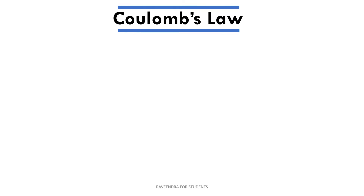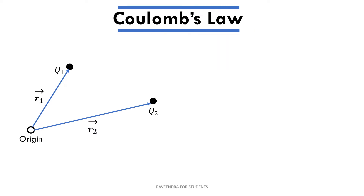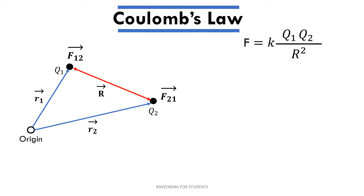Now let us see how to apply Coulomb's Law for practical cases. Assume we have an origin, and point charges q1 and q2 are placed at distance vectors r1 bar and r2 bar from the origin. If we want to calculate the force on both charges q1 and q2 separated by a distance r bar, there are two forces to calculate: the force on q1 due to q2, represented as f12 bar, and the force on q2 due to q1, represented as f21 bar. The formula according to Coulomb's Law is F equals K times q1 q2 divided by r squared. For f12 bar we use r12, and for f21 bar we use r21.